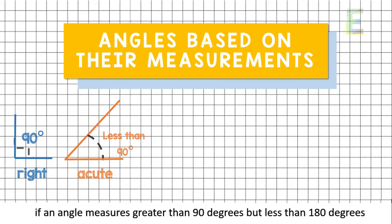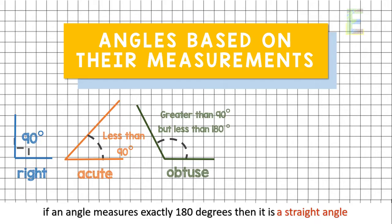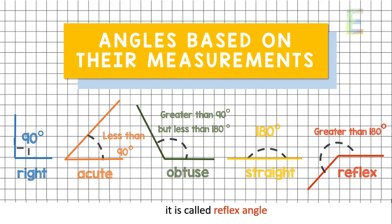If an angle measures greater than 90 degrees but less than 180 degrees, then it is an obtuse angle. If an angle measures exactly 180 degrees, then it is a straight angle. And lastly, if an angle measures greater than 180 degrees, then it is called a reflex angle. So that's the end of a quick recap about angles.